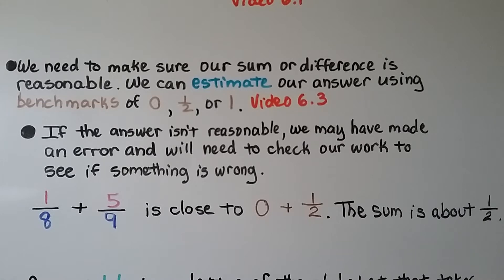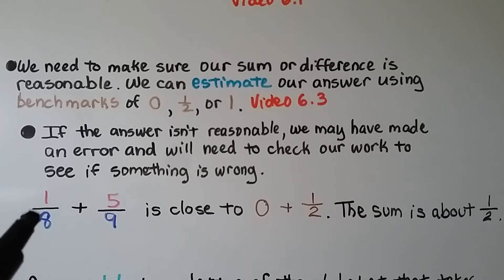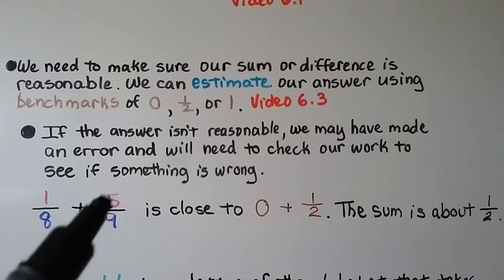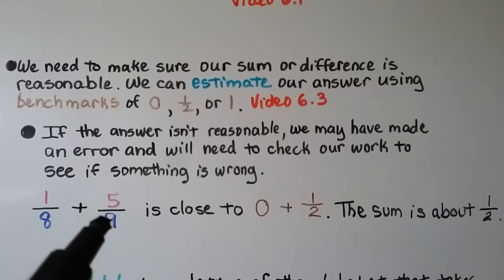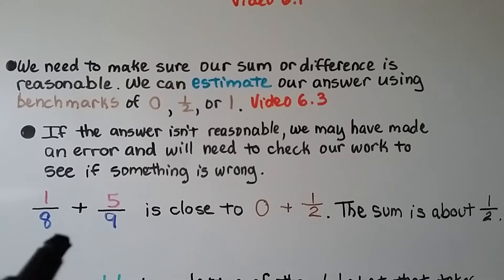We need to make sure our sum or difference is reasonable. We can estimate our answer using benchmarks of 0, 1 half, or 1 whole — we learned about those in video 6.3, which is linked in the description. If the answer isn't reasonable, we may have made an error and need to check our work. For example, 1 eighth plus 5 ninths: 1 eighth is very close to 0, and 5 is almost half of 9, so we estimate 5 ninths as 1 half. So we have 0 plus 1 half — the sum is about 1 half.